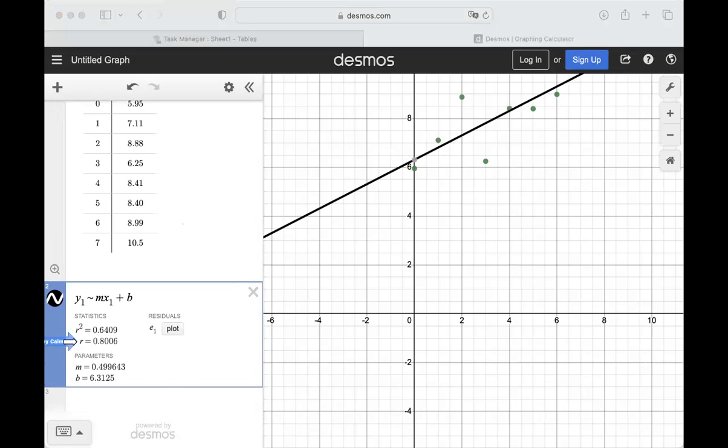It also gives you R, which is your correlation coefficient. The closer it is to 1 or negative 1 shows how good a fit that line is to the data set. So this is at 0.8, so it's a pretty good fit. If it were at like 0.3, it would not be a good fit at all. So this is a pretty good fit to the data.